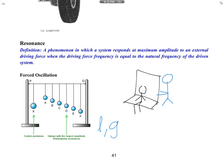The natural frequency of a pendulum depends only on the length of the string and the acceleration of gravity — not on mass. So even though these two pendulums have different masses, since they have the same length, they have the same natural frequency. The rest of the pendulums will oscillate with smaller amplitudes: the further their natural frequency is from the driving frequency, the smaller their amplitude.